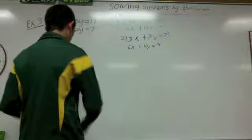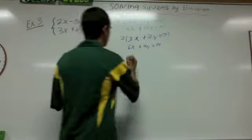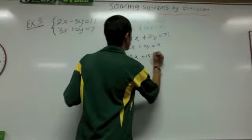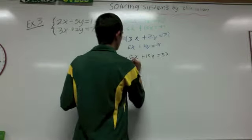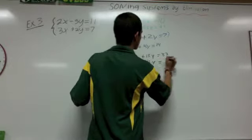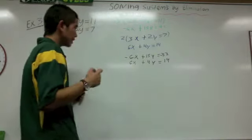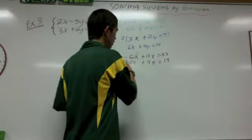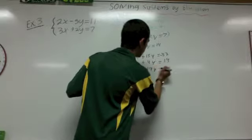Now we're going to put them together and add them. So negative 6x plus 15y equals negative 33, and then 6x plus 4y equals 14. The x's cancel out because they're opposite, and then this will be 19y equals...